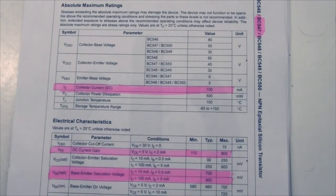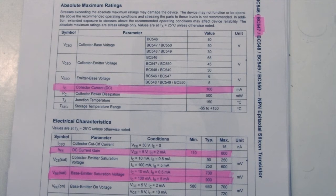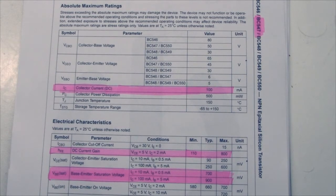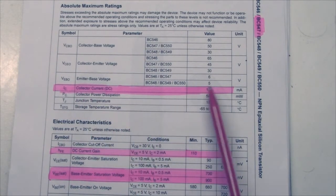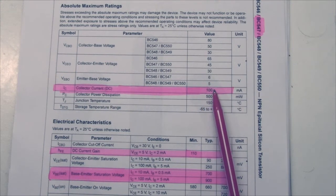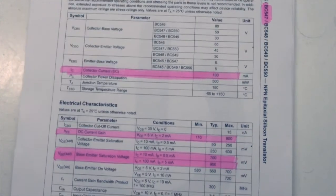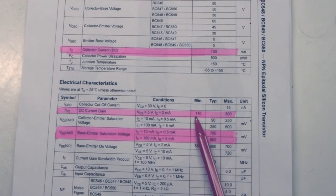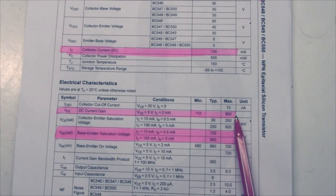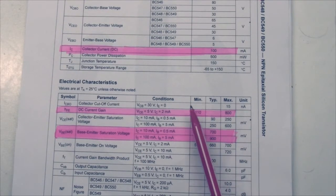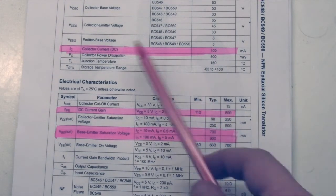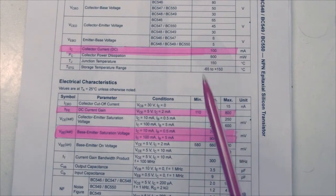I have printed out the datasheet for a typical transistor, the BC547. As we see, it has a maximum collector current of 100 milliamps. We also see that the gain is between 110 and 800 times, which means that the base current will be somewhere between 110 times or 800 times smaller than the collector current.